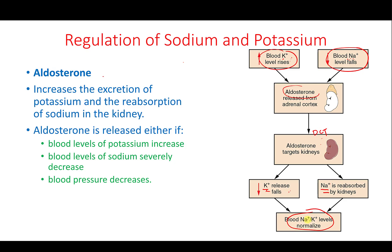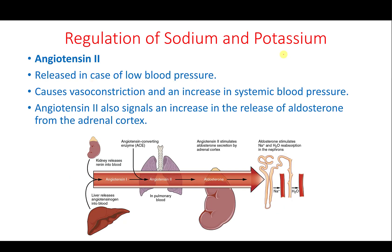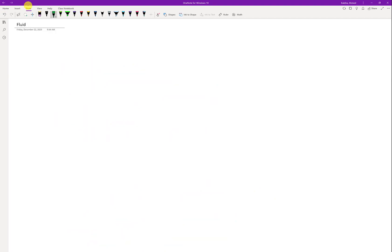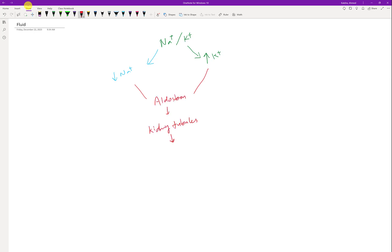Aldosterone targets the kidney tubules to reabsorb sodium and let potassium go, restoring their levels. Sodium reabsorption in the DCT is a normal regulated process, but potassium reabsorption in the DCT rarely happens. If potassium is needed, it is absorbed from the proximal convoluted tubule, but that reabsorption is not controlled by hormones. There is no hormone that causes potassium reabsorption in the DCT.